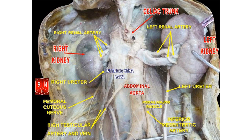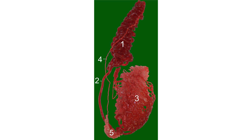They are two slender vessels of considerable length, and arise from the front of the aorta a little below the renal arteries. Each passes obliquely downward and lateralward behind the peritoneum, resting on the psoas major, the right lying in front of the inferior vena cava, and behind the middle colic and ileocolic arteries, and the terminal part of the ileum, the left behind the left colic and sigmoid arteries and the iliac colon.